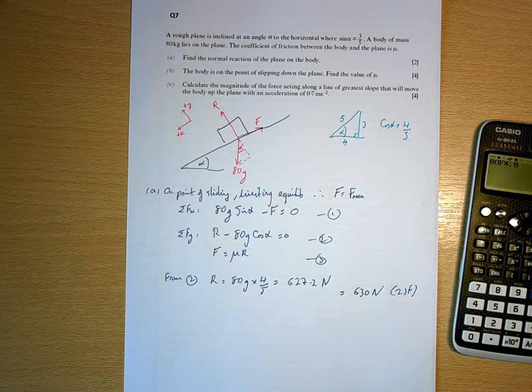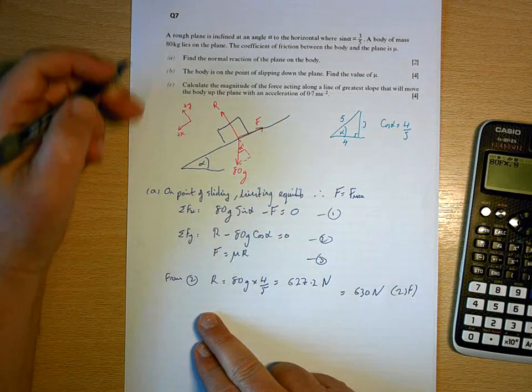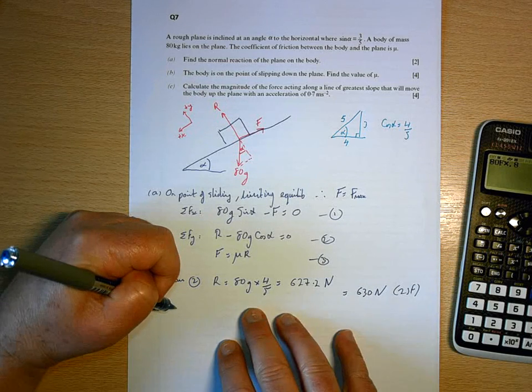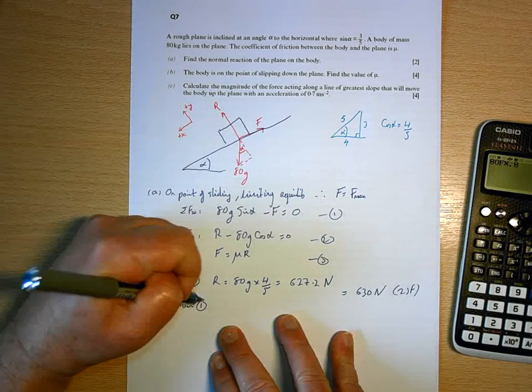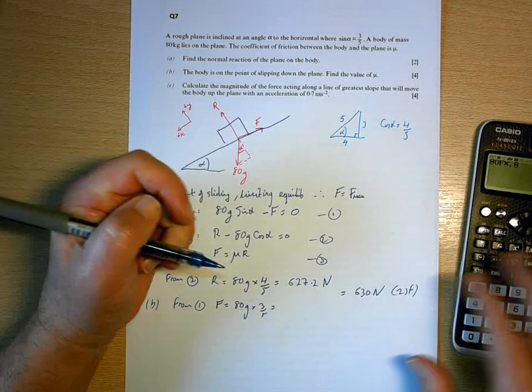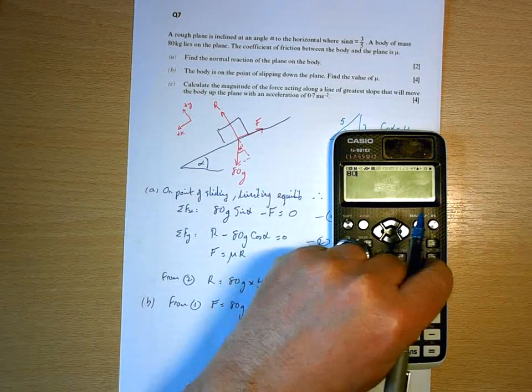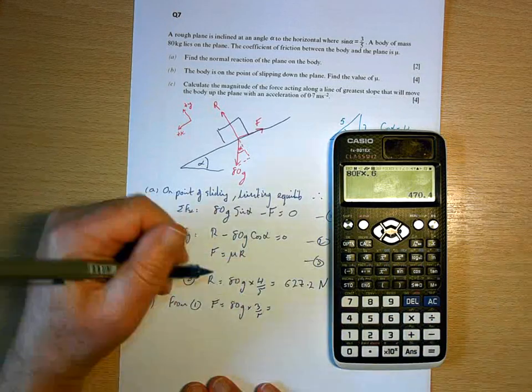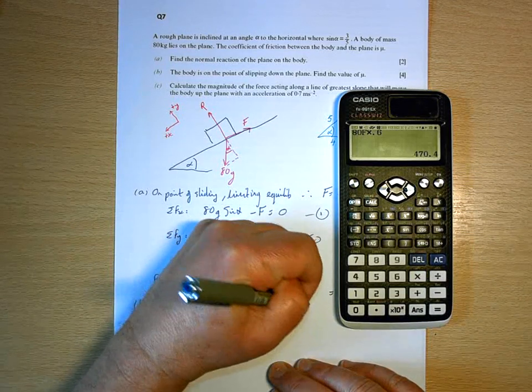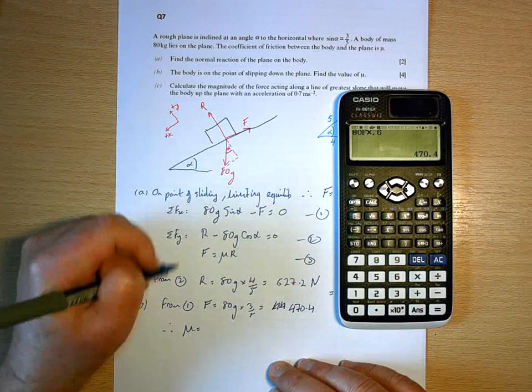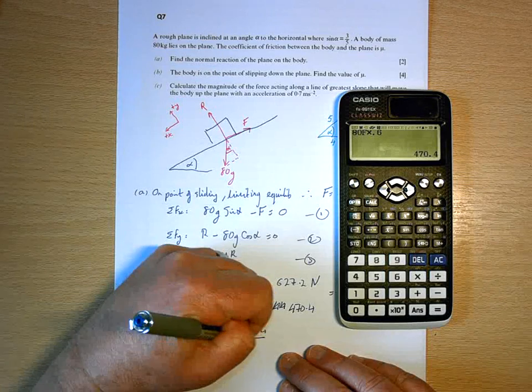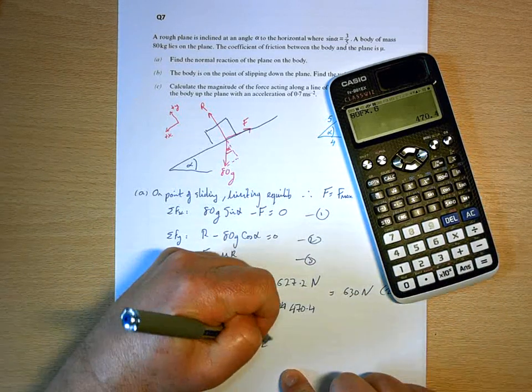So that's the normal reaction. Find the value of mu. I know R. From equation one, f is 80g times three-fifths, which is 470.4.